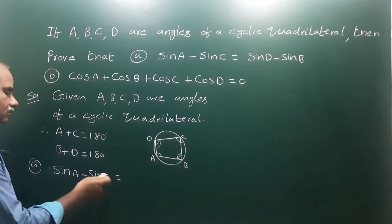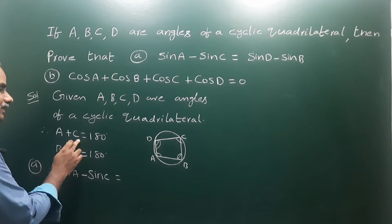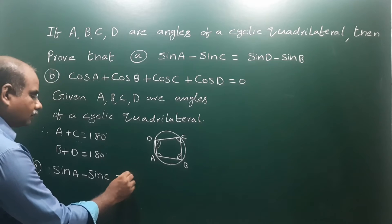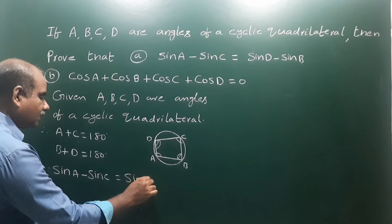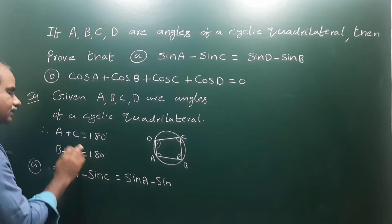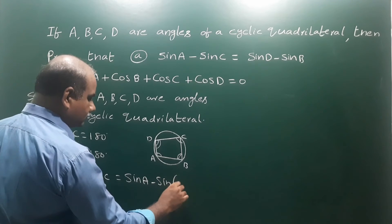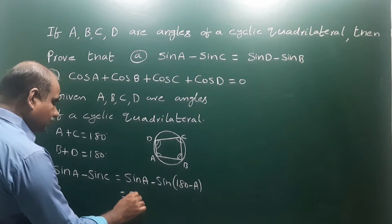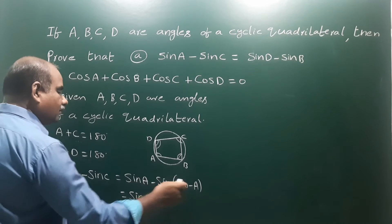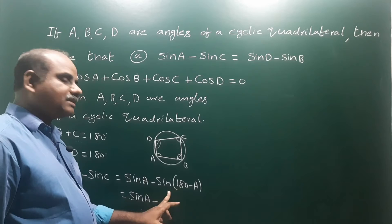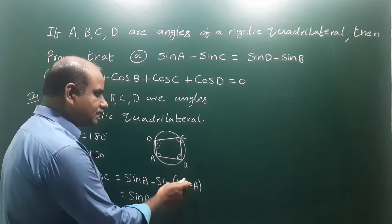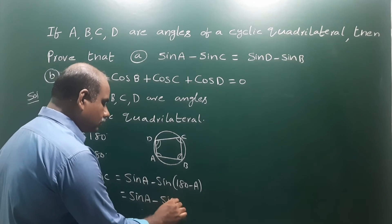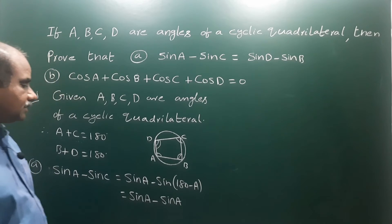Since A plus C equals 180, we have C equals 180 minus A. So sin A minus sin C becomes sin A minus sin(180 minus A). Since 180 minus A is in the second quadrant, sin is positive there, so sin(180 minus A) equals sin A. Therefore, sin A minus sin A equals zero.